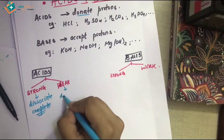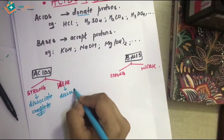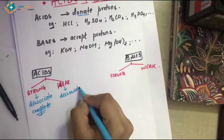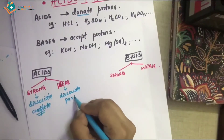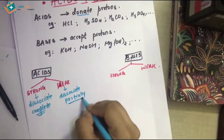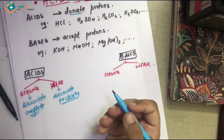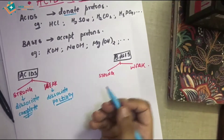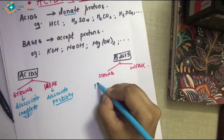As for weak acids, they do dissociate, but since they dissociate very slowly and only partially, it is not really a matter of time — it is about whether dissociation is complete or not.